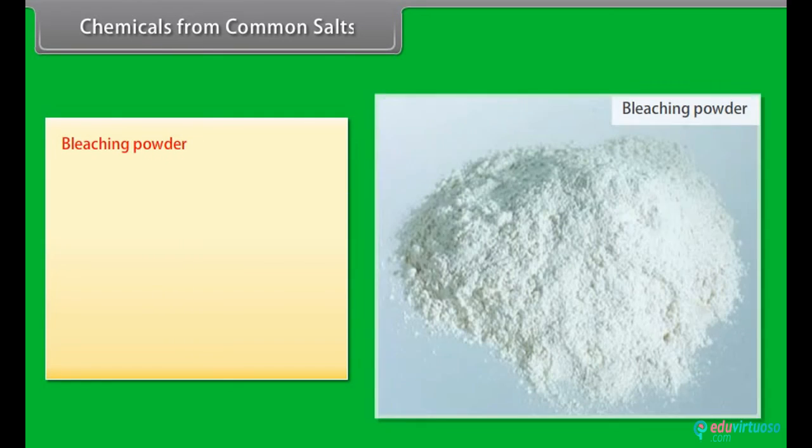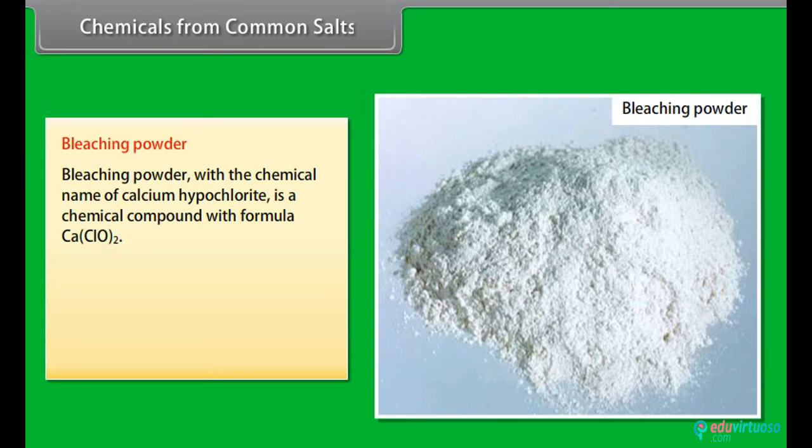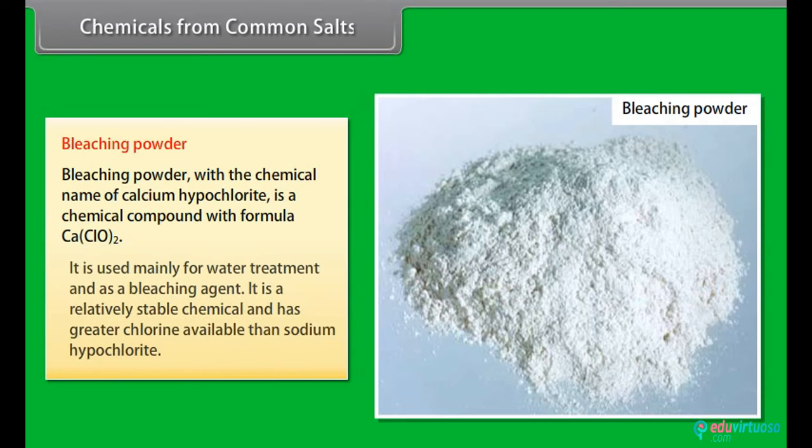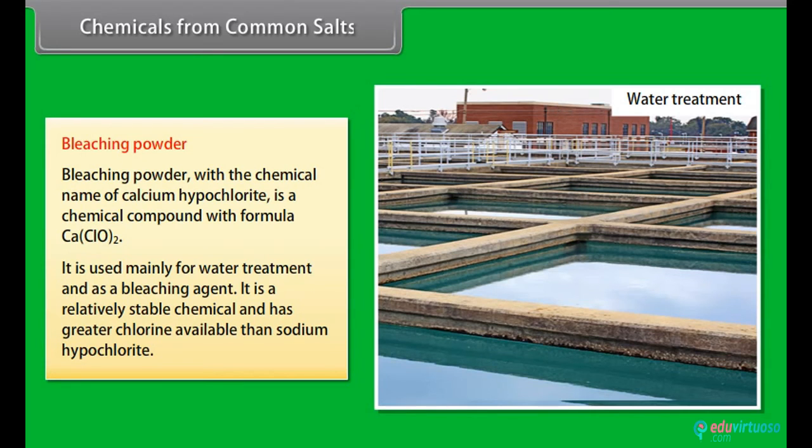Bleaching powder. Bleaching powder with the chemical name of calcium hypochlorite is a chemical compound with formula CaClO2. It is used mainly for water treatment and as a bleaching agent. It is relatively stable chemical and has greater chlorine available than sodium hypochlorite.